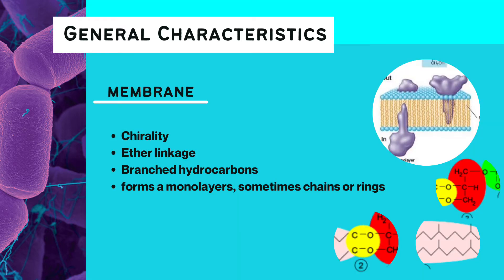The last general characteristic is the membrane. The chirality of the glycerol linkage in Archaea is in L-isomeric form, while bacteria and eukarya have the D-isomeric form. Archaea's side chains are bound using ether linkages, which lacks that additional protruding oxygen atom. This gives the resulting phospholipid different chemical properties from the membrane lipids of other organisms. It also has branched hydrocarbons and forms a monolayer, sometimes chains or rings.